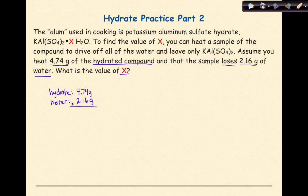We need to take the difference because when we do a hydrate problem, there's two pieces of information that we need: the mass of the water and the mass of the anhydrate. Right now we just have the mass of the water. So if I subtract 2.16 grams from 4.74 grams, I get 2.58 grams of anhydrous salt.